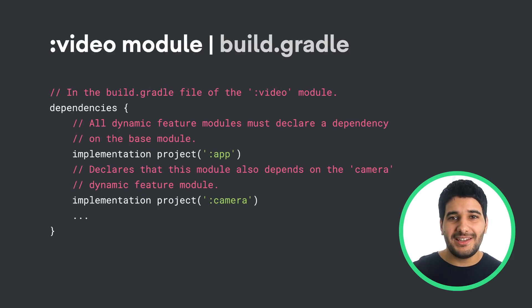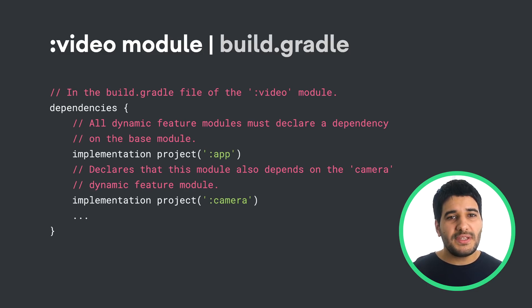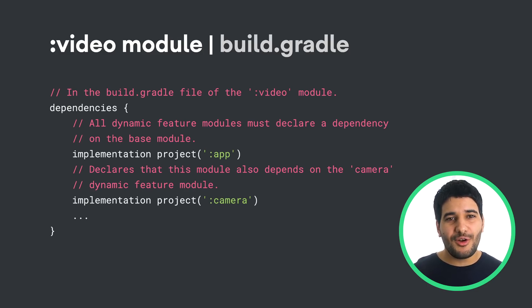Here's how you can declare a module that depends on another in your build Gradle file. You specify inside your dependencies an implementation of the other module project.